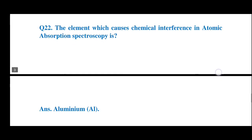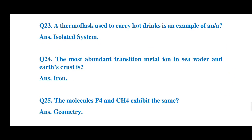Question number 22: The element which causes chemical interference in atomic absorption spectroscopy is — which element causes interference in atomic absorption spectroscopy? The answer is aluminum (Al). The element which causes chemical interference in atomic absorption spectroscopy is aluminum.